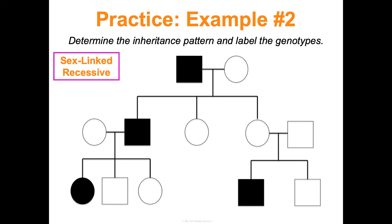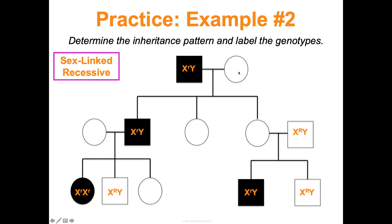To label genotypes in a sex-linked recessive pedigree, start with the males since they're XY and you only need to figure out one allele. Every affected boy is X^r Y (they have the recessive allele). Every unaffected boy is X^R Y. For girls, an affected girl must be X^r X^r. All other unaffected girls are X^R X^? — we need to work them out individually.